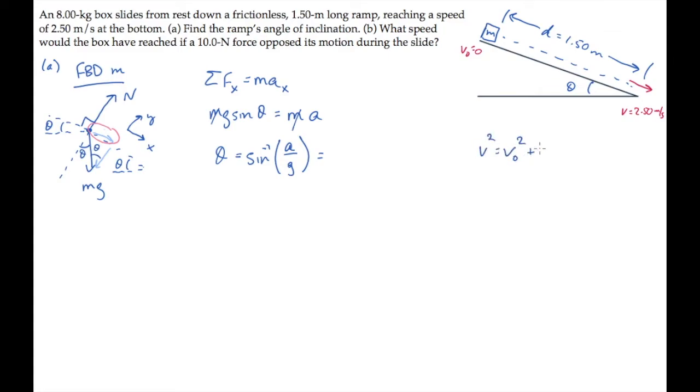The time-independent kinematic equation gives us an expression for the square of the box's final velocity in the x-direction, which is down the ramp. The box starts from rest and moves through a displacement of d.